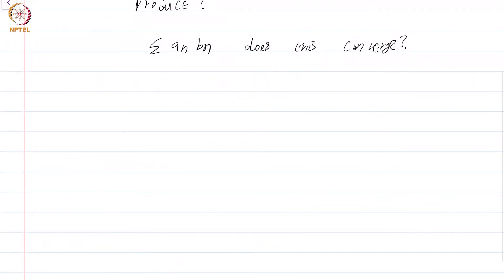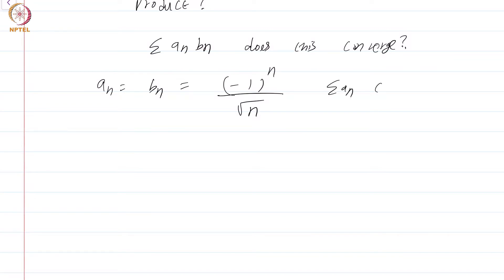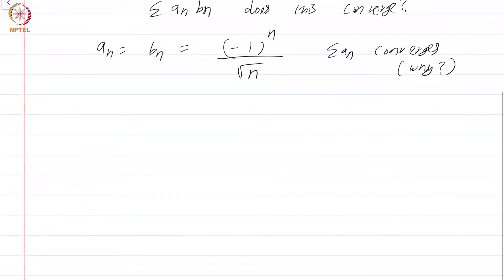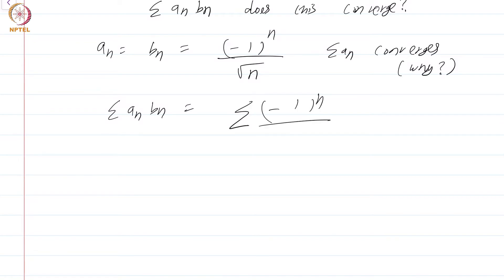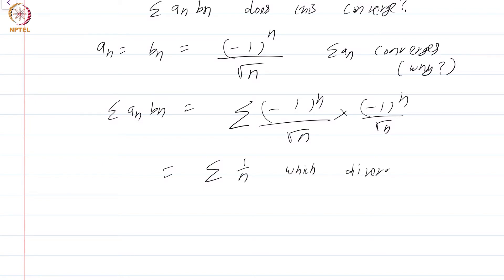Suppose I take aₙ equal to bₙ equal to (−1)ⁿ divided by square root of n. Then summation aₙ converges — think about why; we have a precise test that tells you why this converges. Then summation aₙbₙ is nothing but summation of (−1)ⁿ/√n times (−1)ⁿ/√n, which is just summation 1/n, which diverges.